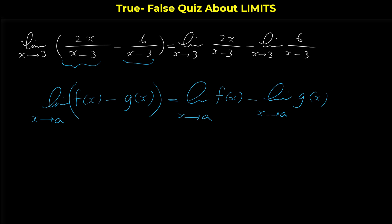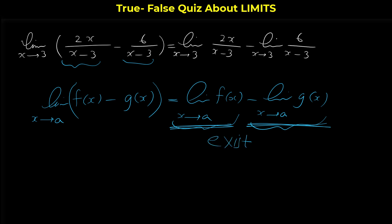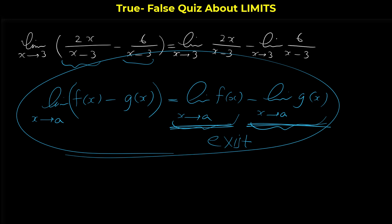But we can write the limit of f - g as the limit of f minus the limit of g only when both of these limits — the limit of f(x) and the limit of g(x) as x approaches a — exist. Otherwise this relation is not correct.